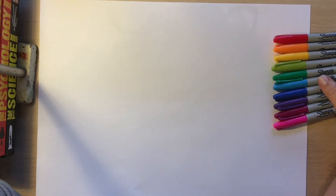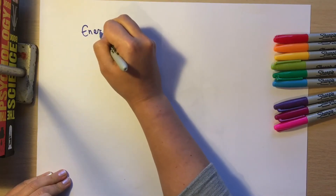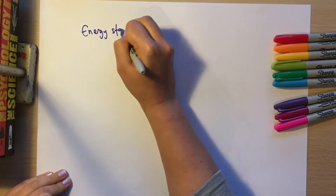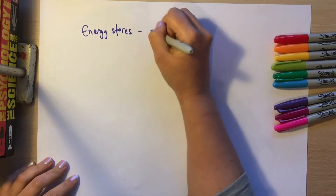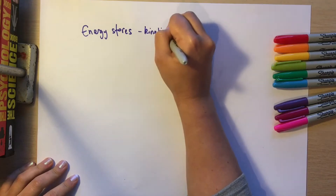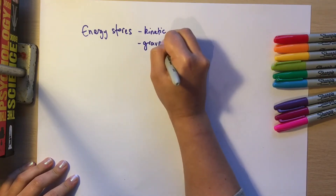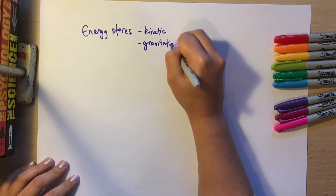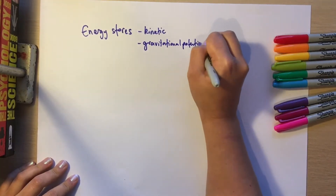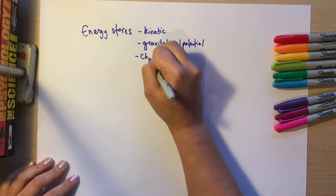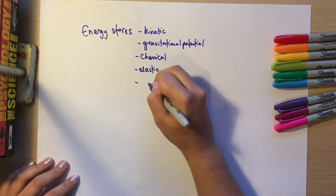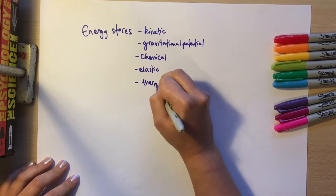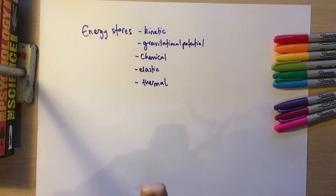This video is a revision on energy stores and transfers. Let's think about the energy stores that we know about. We know about kinetic energy, gravitational potential, chemical, elastic, and thermal. These are our five energy stores.